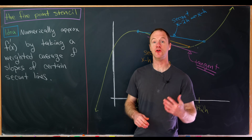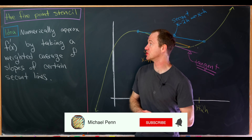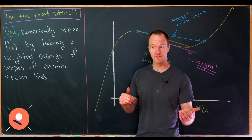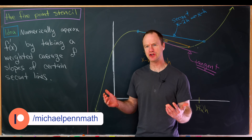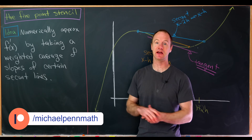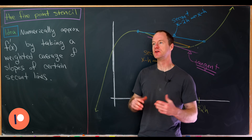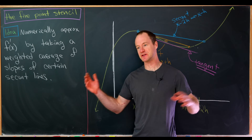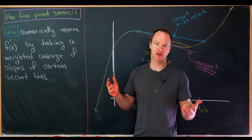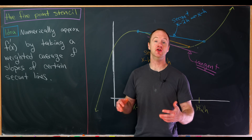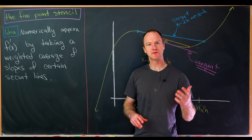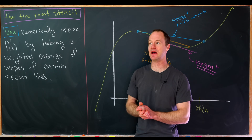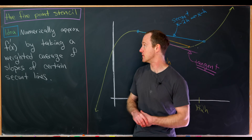Today we're going to look at a method of numerical differentiation known as the five-point stencil. In applied mathematics, you often have a bunch of data but not an analytic version of a function, so you need to find some way to take derivatives of functions described by this data without actually taking the derivative — and you might do that with numerical differentiation. Here's the idea behind the five-point stencil and really behind a lot of different techniques of numerical differentiation.